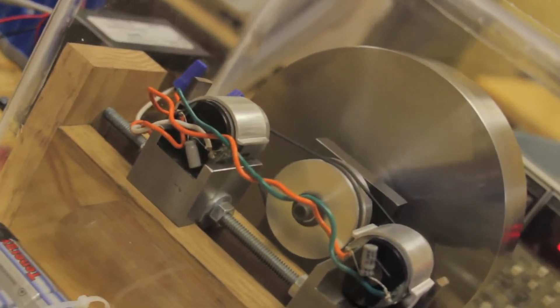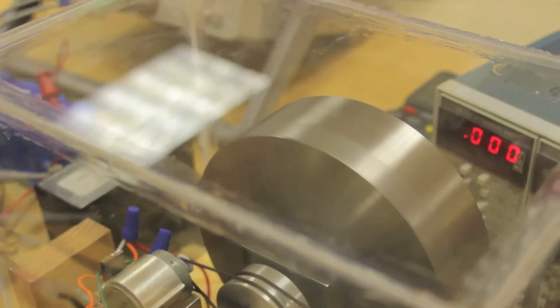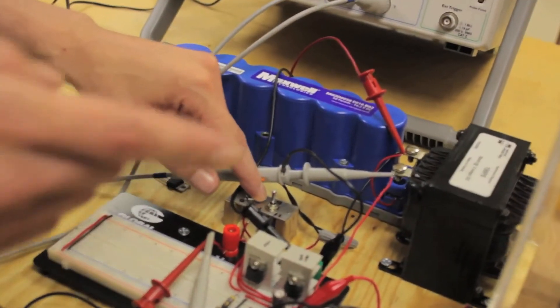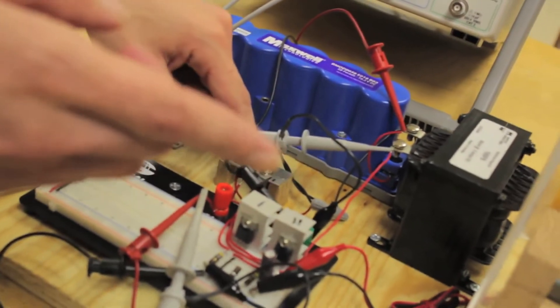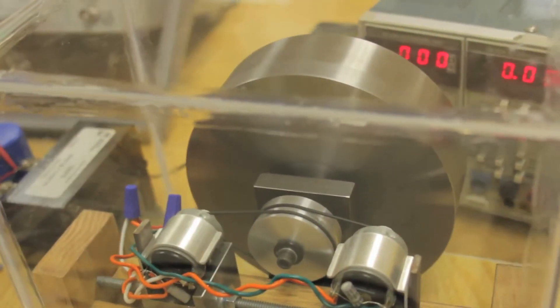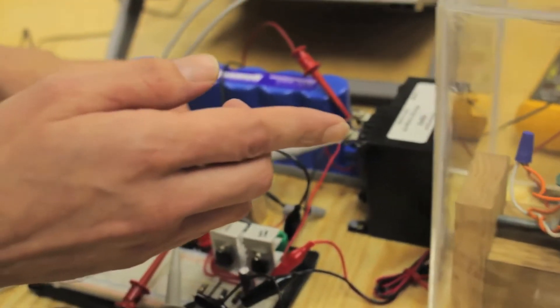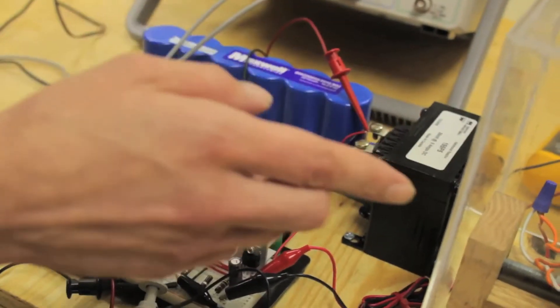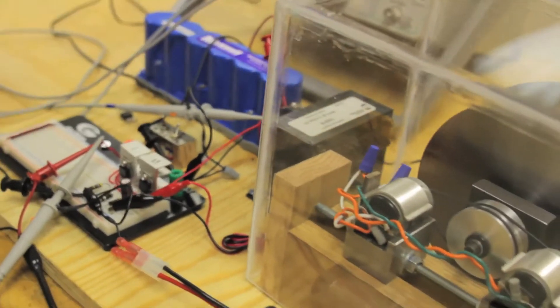Once the flywheel comes up to speed, we simulate deceleration. Once the batteries are removed, the motors become generators, and they're generating electricity. We actuate this transistor, and it sends energy from the motors to the ultracapacitor.